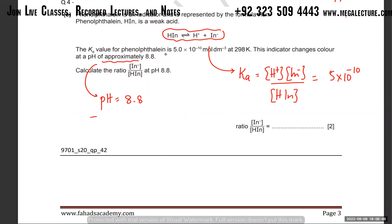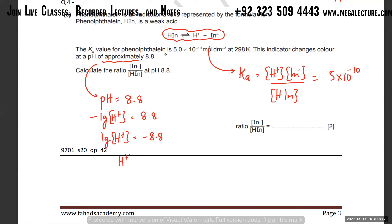With the pH, what can you do? pH is the negative log of the concentration of H⁺ ions, and that equals 8.8. So you can figure out the H⁺ concentration. Take the negative log: log[H⁺] = −8.8. Take it to the other side and take the anti-log — since log expresses values as powers of 10, it becomes 10 to the power minus 8.8.